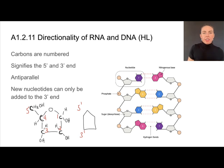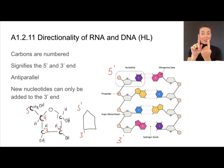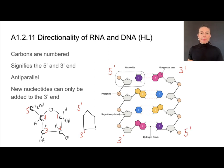On one strand, you're going to have the five prime end up at the top — that would be this carbon here — and at the end of the strand is the three prime end. On that other strand, remember that's anti-parallel, you're going to have the three prime end facing this way and the five prime end facing this way. So that's really what anti-parallel means: five to three on one end and three to five prime on the other.